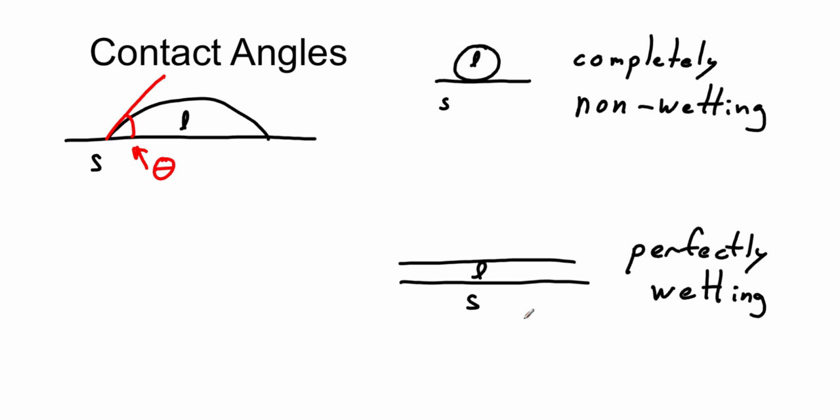In the case of perfect wetting, we have theta equal to zero. In the case of perfectly non-wetting, theta is equal to 180 degrees. And in most cases, we have something in between the two, where theta is some angle between zero and 180 degrees. The cutoff between wetting and non-wetting is something that has a 90 degree contact angle. So if theta equals 90 degrees, it's neither wetting nor non-wetting.